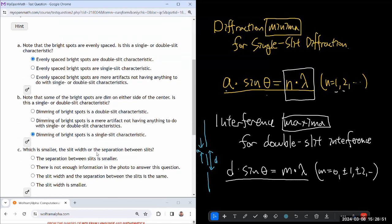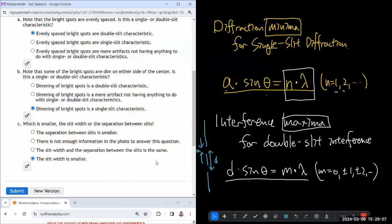Which is smaller, the slit width or the separation between slits? I don't think you need to see a picture to know - how could the separation ever be larger than the slit size? Like that's impossible. So slit width is smaller. It's like that's the only physically possible arrangement.